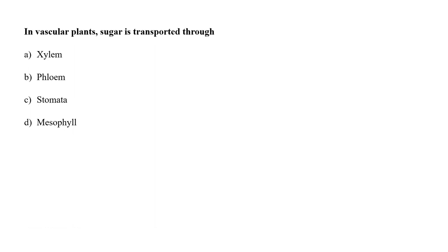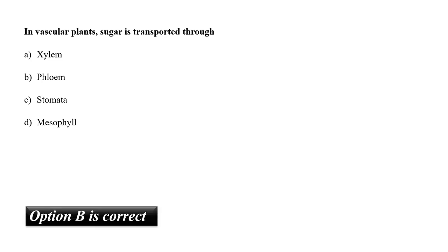In vascular plants, sugar is transported through A. xylem, B. phloem, C. stomata, or D. mesophyll? In vascular plants, the process of transporting sugar is called translocation and it takes place in the phloem. So the correct answer is option B.